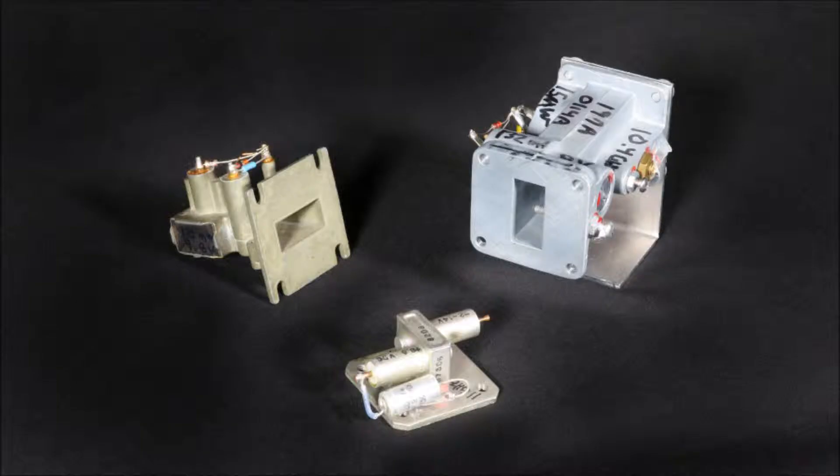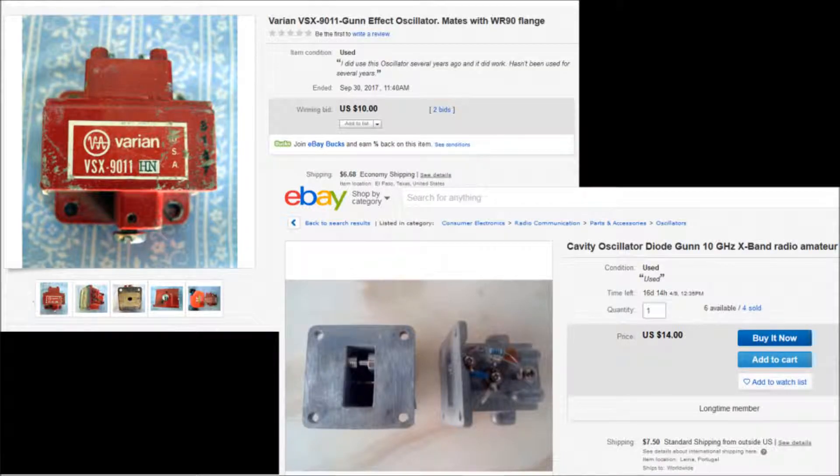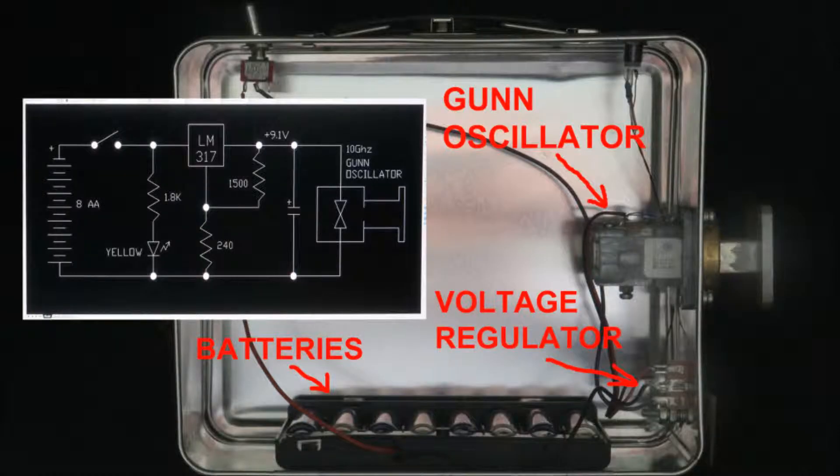You can sometimes pick up these Gunn oscillators on eBay for $20 or so. I mounted mine in a hinged tin box, essentially a small lunch box. Besides the Gunn source, there are batteries and a three terminal voltage regulator to supply the optimum voltage to the Gunn diode. The voltage is not critical. I have added a waveguide extension to bring a waveguide flange outside of the box where we will be connecting various antennas.